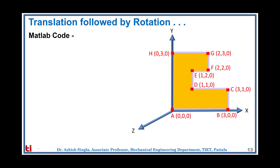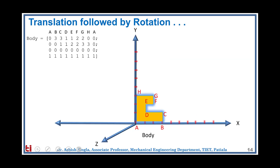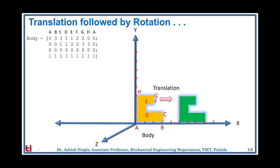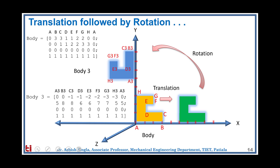The third case is translation followed by rotation, using the concept of compound transformations. T3 is the pure rotation and T1 is the pure translation. On the body, we first apply T1 as translation and then T3 as rotation. The original body is translated 5 units along the x-axis and then rotated about the z-axis, resulting in the blue body, with coordinates given in the resulting matrix.